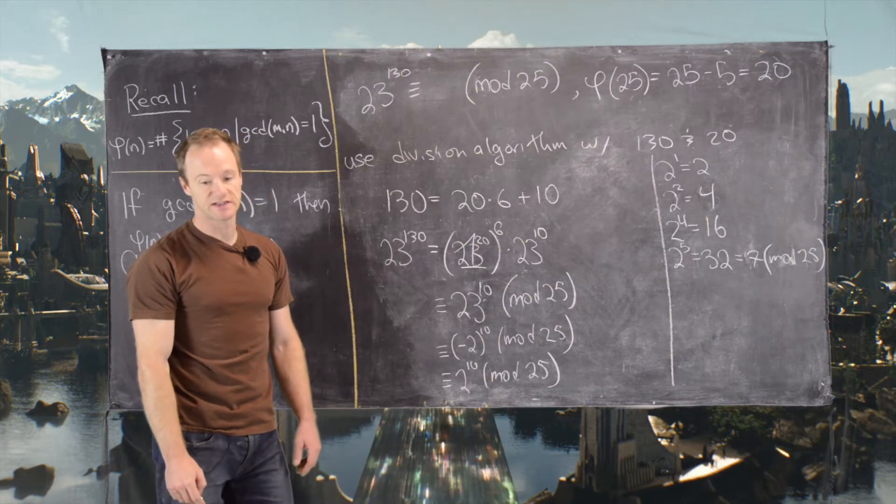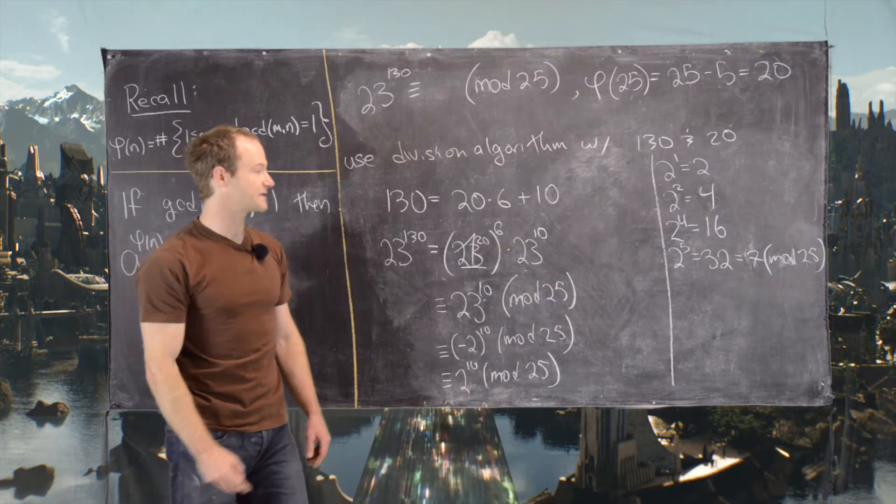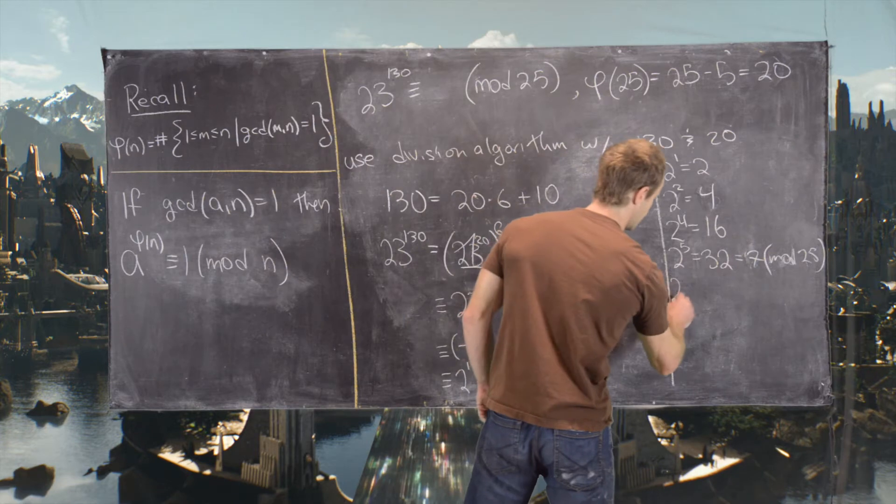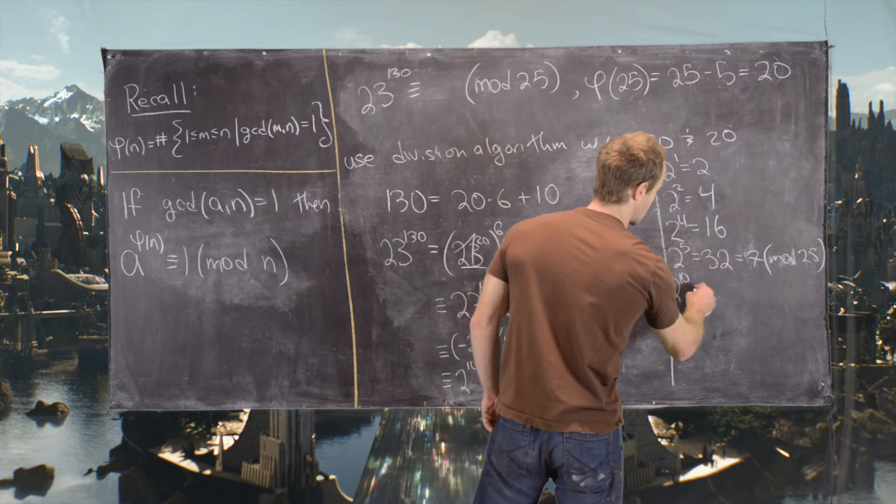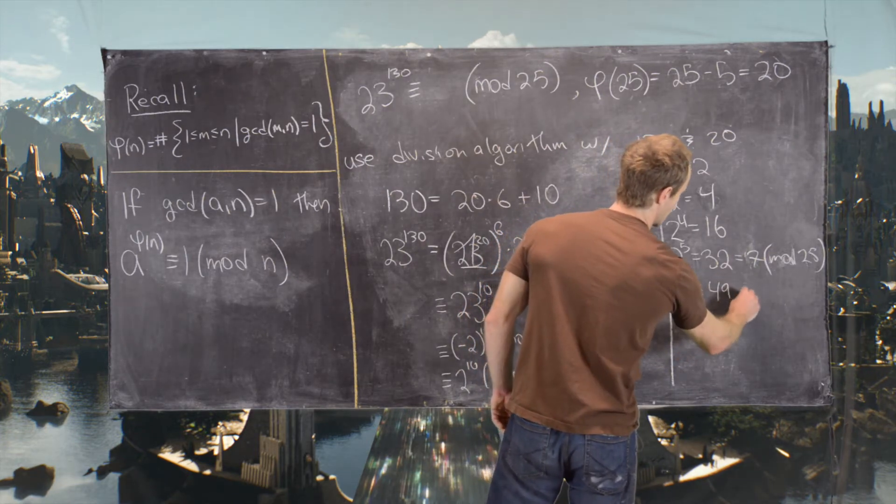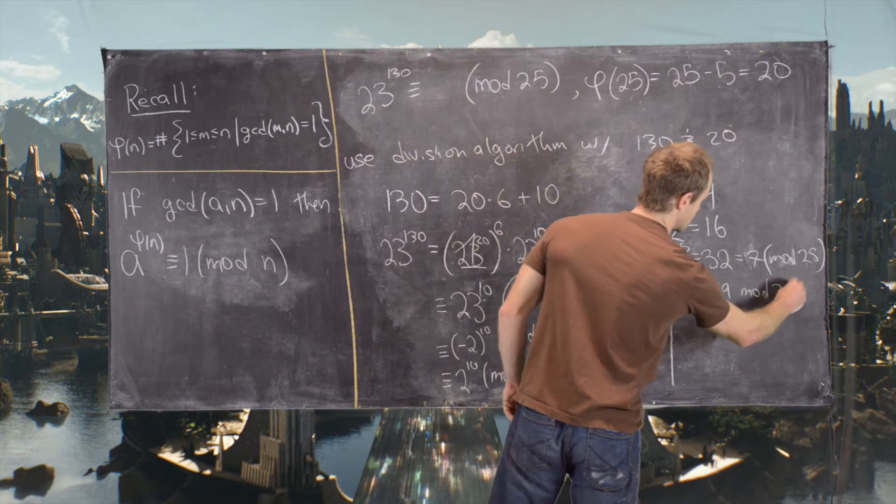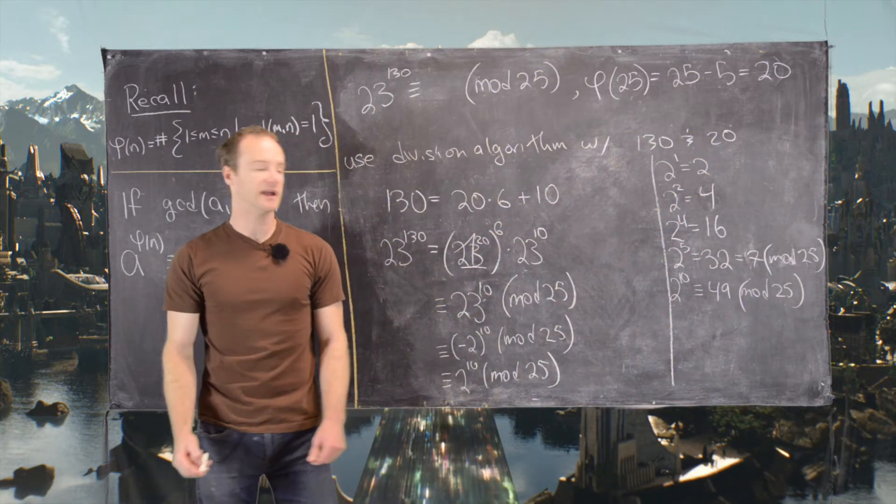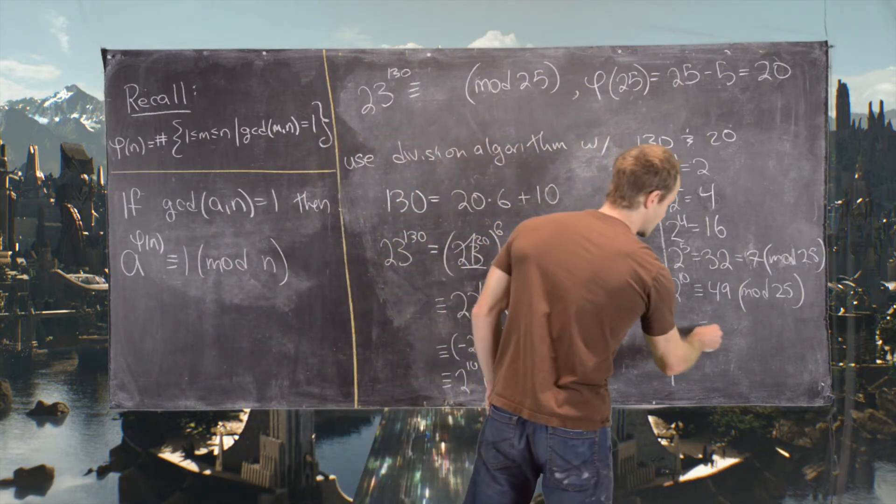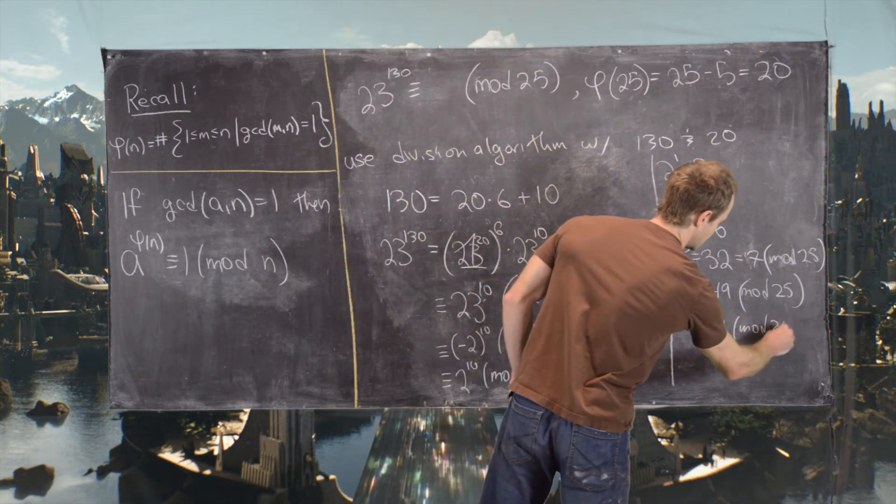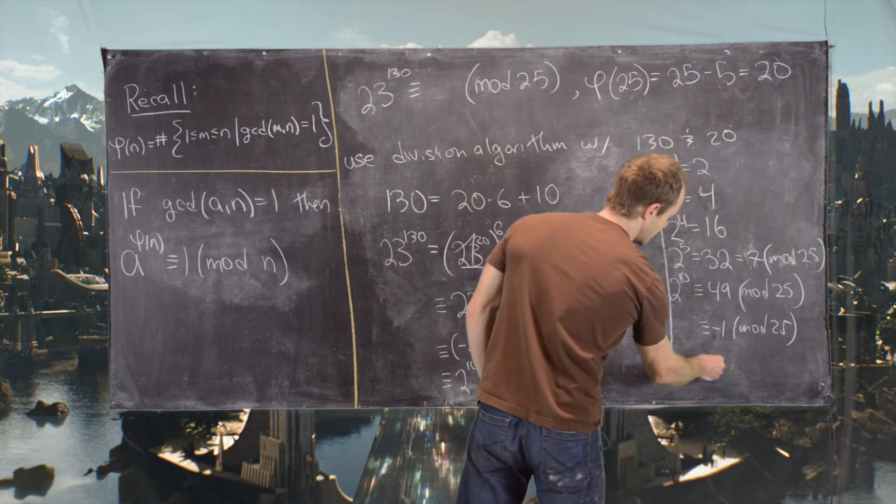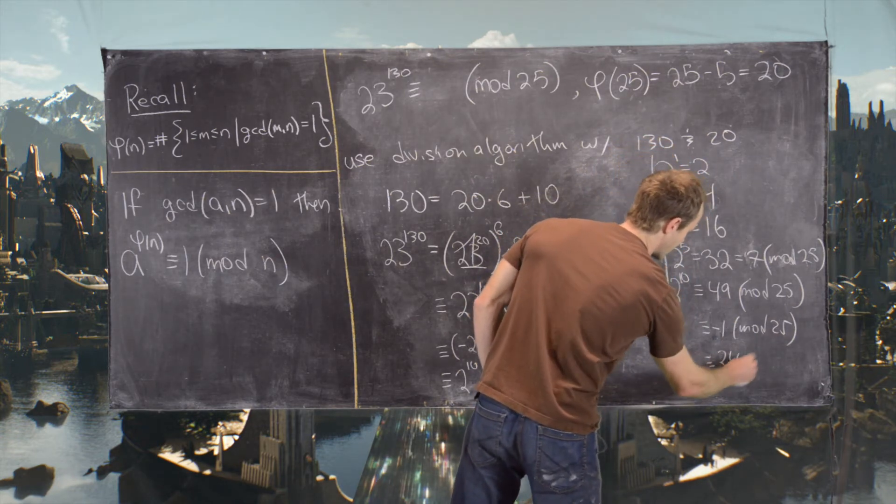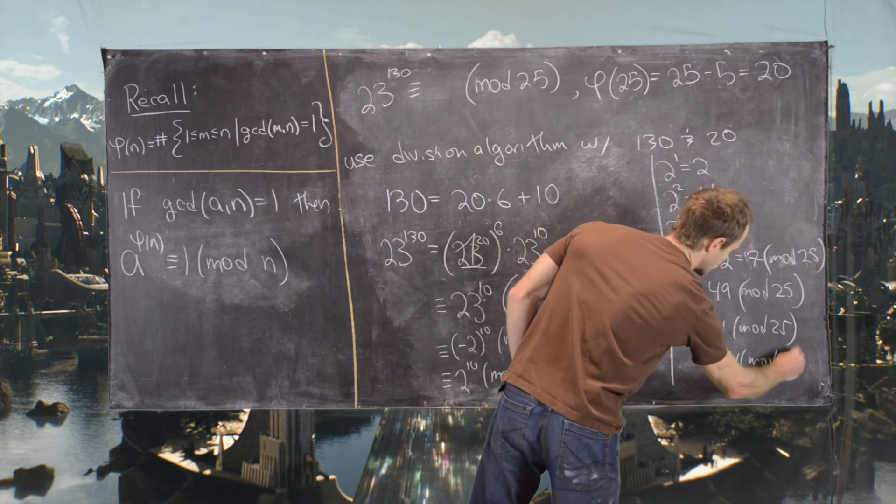that tells us that 2 to the 10 is the same thing as 49 mod 25. So 2 to the 10 is congruent to 49 mod 25. But now 49 is negative 1 mod 25 because it's 1 less than 50. But that is the same thing as 24 mod 25.